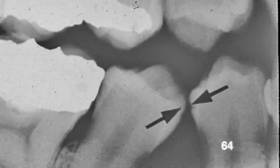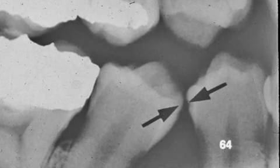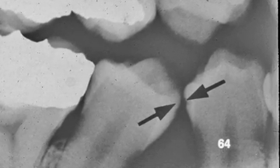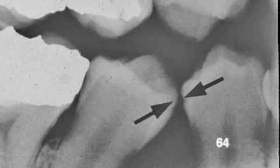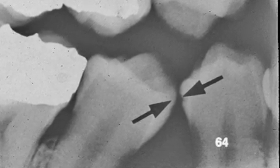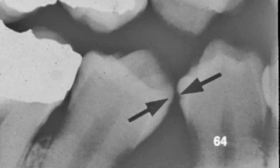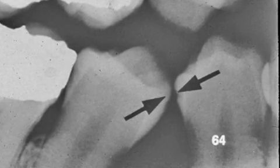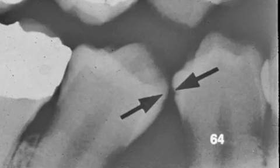Can it remineralize, or will it need a filling? The arrow to your right points to an area where the caries appears to be more than halfway through the enamel. This is no longer incipient — it is C2.